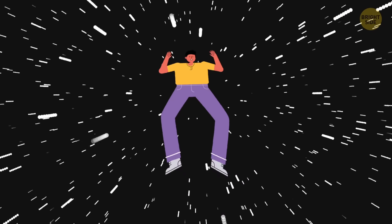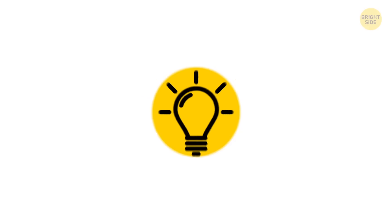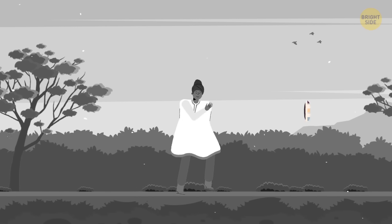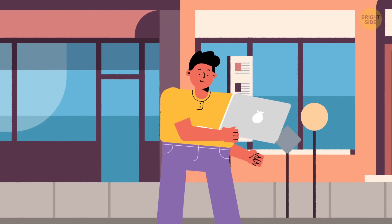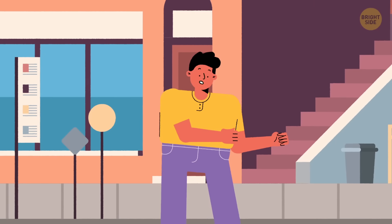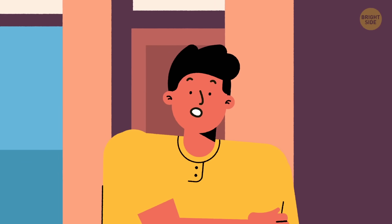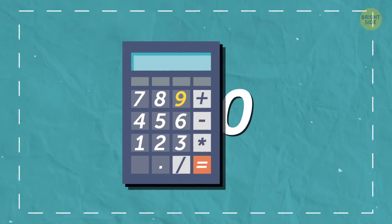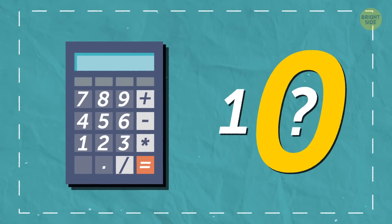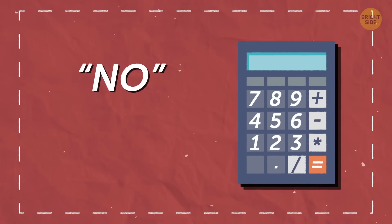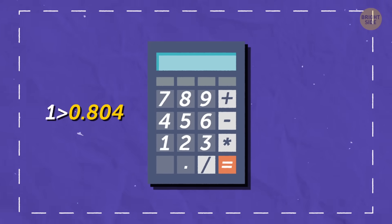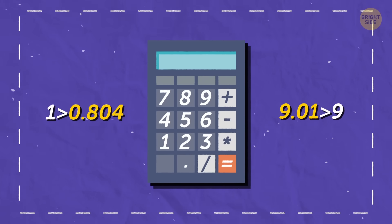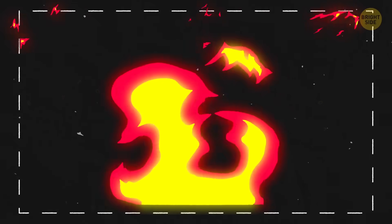Yet zero is so incredibly important. Life today without zero — we've come a long way since the 5th century, like 16 more centuries. Zero now has countless uses, and a modern world stripped of this basic concept would look very different indeed. Your first thought might be that we could no longer count higher than 9 or lower than 1. Fractions like 0.804 are lower than 1, and 9.01 is higher than 9. The entire system of counting and measuring would break down without zero.